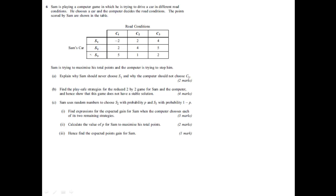It's Sam's matrix, he's the row player, so the higher the number the better. If, however, Sam chose strategy 1 and the computer chose its strategy 1, then Sam would lose 2, gain minus 2. So this shows if the computer played C2 and Sam played C2, then Sam would gain 4 and so on.